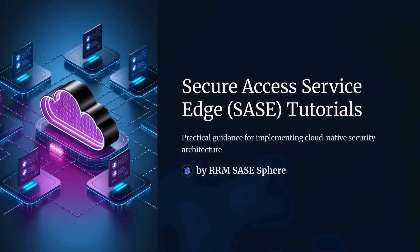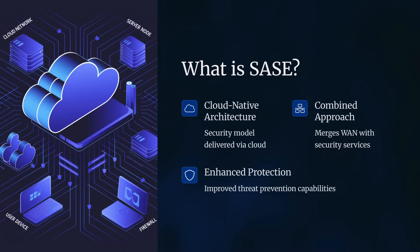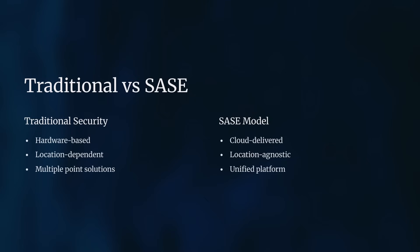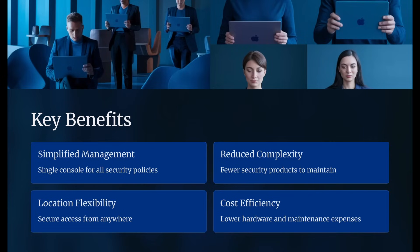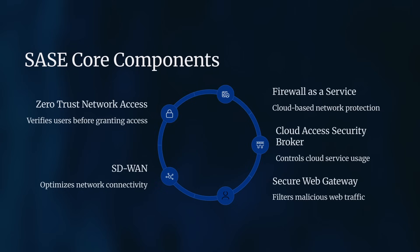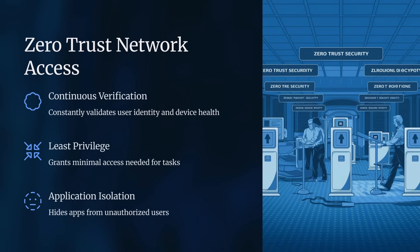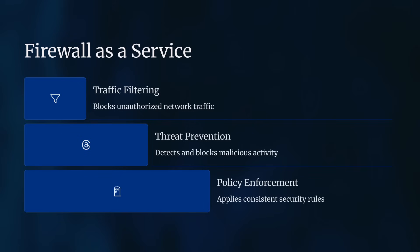Secure Access Service Edge, or SASE, tutorials provide practical guidance for implementing and optimizing this cloud-native security architecture. These tutorials typically cover key components and implementation strategies to help organizations transition to a SASE model. One crucial aspect is explaining how SASE differs from traditional security models, combining wide-area networking and network security services to deliver improved threat prevention and streamlined security management.